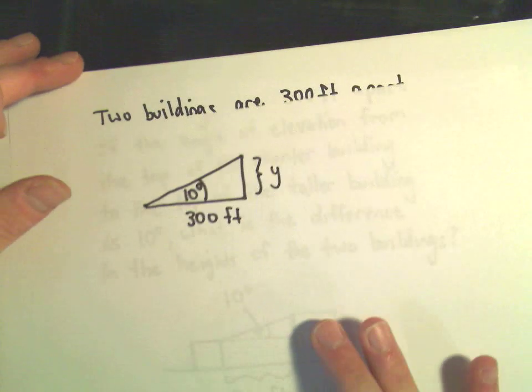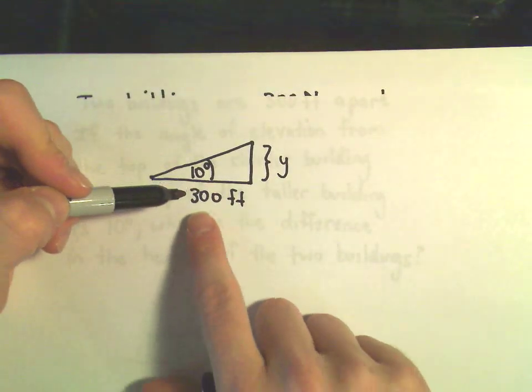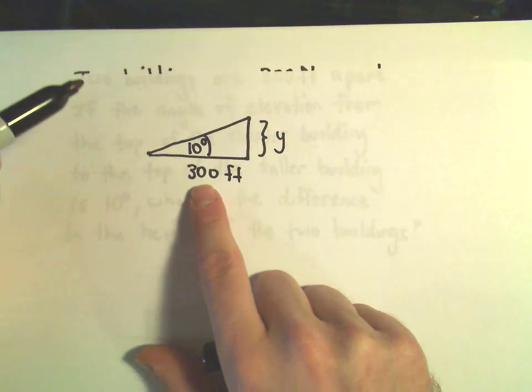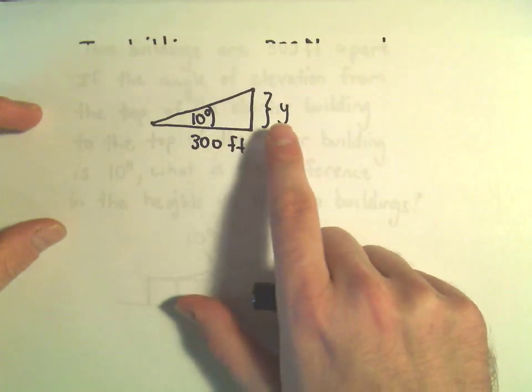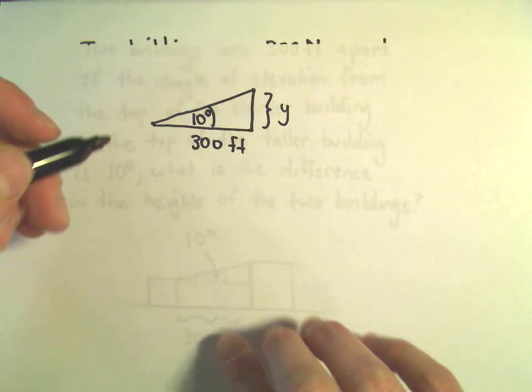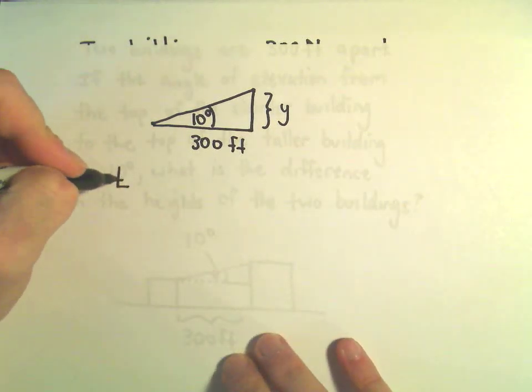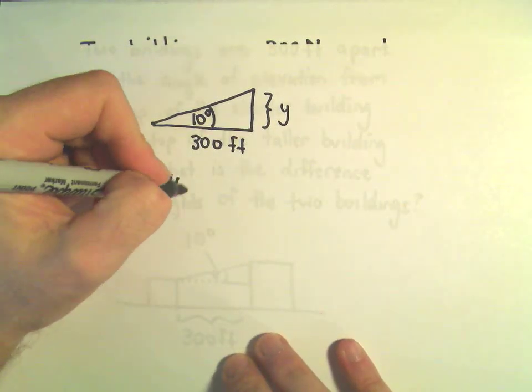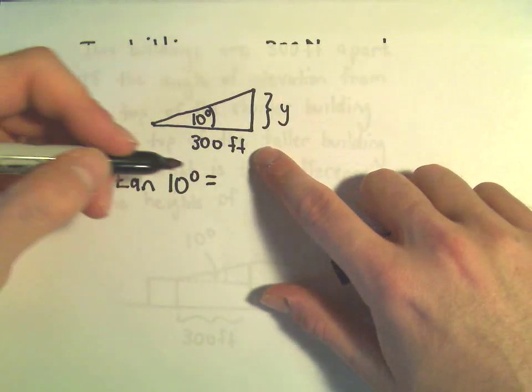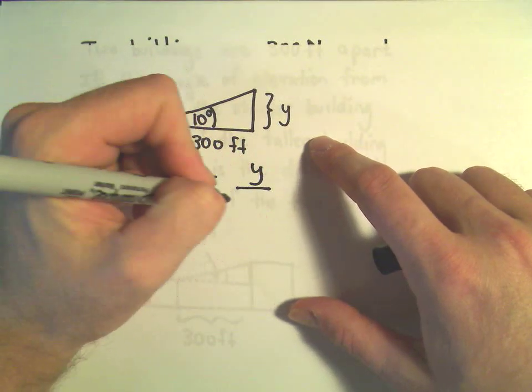So same thing as in the other examples. I've got information about the adjacent side. I'm trying to figure out information about the opposite side so we can use tangent. So tangent of 10 degrees that's the ratio of the opposite side to the adjacent side.